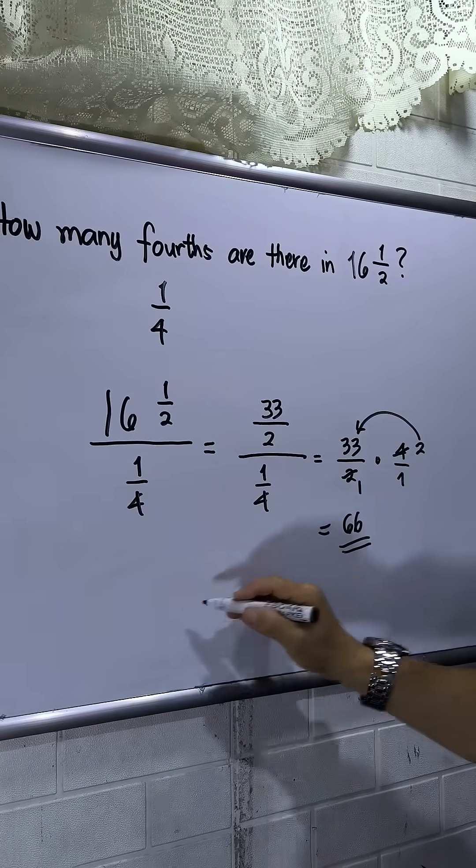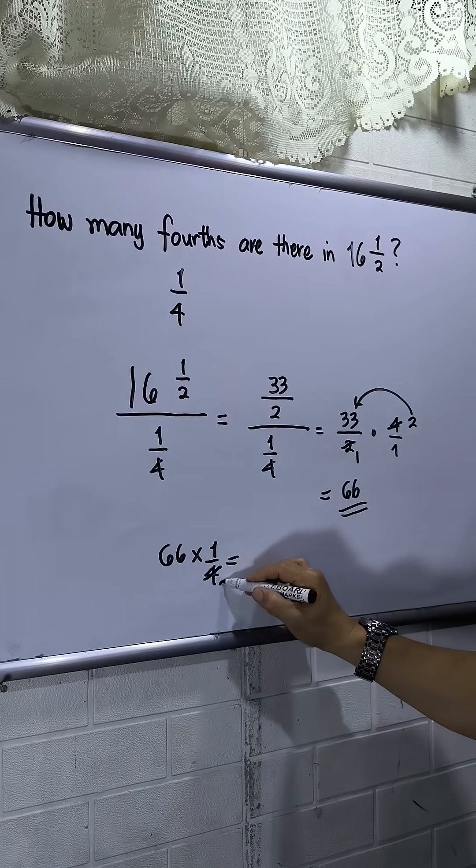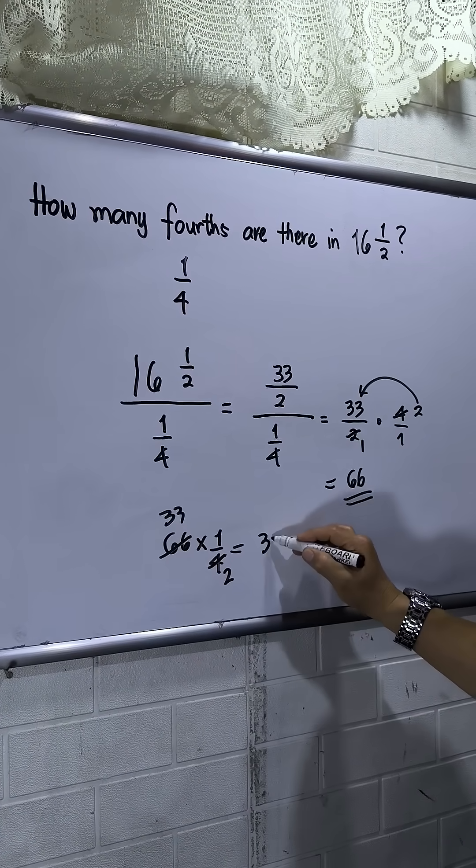So let us check this one. So 66 times 1 fourth. So reduce by 2, this is 2. Divide by 2, that is 33. So meaning 33 over 2.